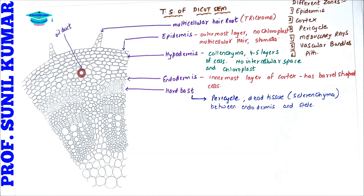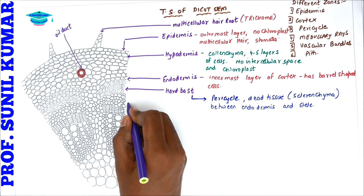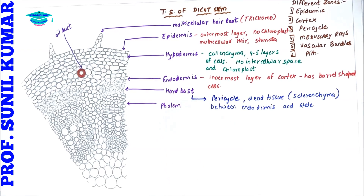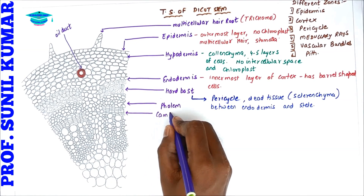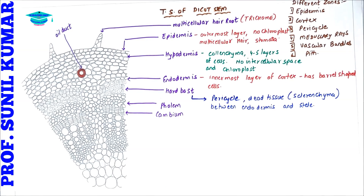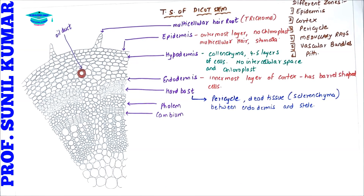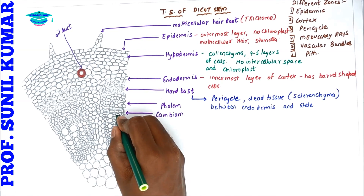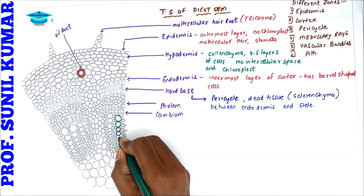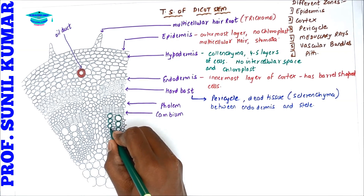Below the hard bast we have the phloem, below that is the cambium, and below that is the xylem. So between phloem and xylem there is a cambium present. The xylem here is the meta xylem.